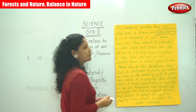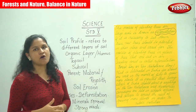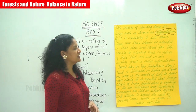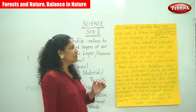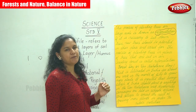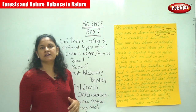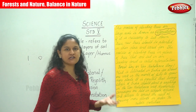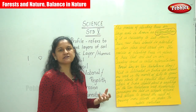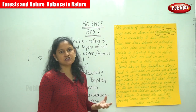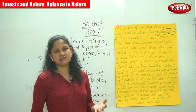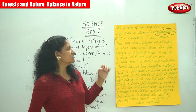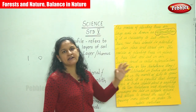If it is necessary to cut down trees, new trees should be planted in their place and cared for. For example, if a tree is struck by lightning or any other natural calamity, it becomes necessary to cut it down. In such cases, we should ensure that new trees are planted in their place and tended to.